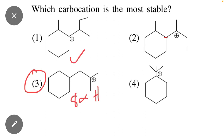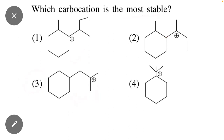It means option 3 will be the correct answer, because option 3 contains 8 alpha hydrogens — that's why this formula will be the most stable carbocation. I hope all students understand this concept of how to identify the most stable carbocation. If you also understand this concept, please subscribe to my YouTube channel, like this video, and share it with your friends and classmates. Allah Hafiz.